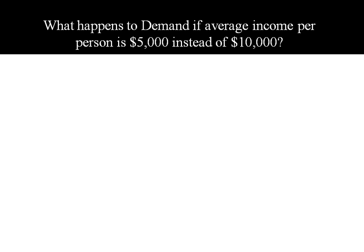Now what happens to demand if average income per person is $5,000 instead of $10,000? Here's where the comparative statics come in. We've got this exogenous change in income and we're going to see what happens to the levels of our endogenous variables price and quantity.